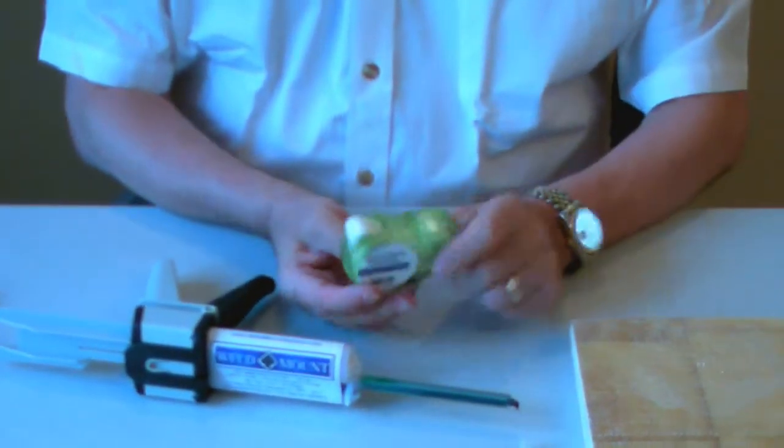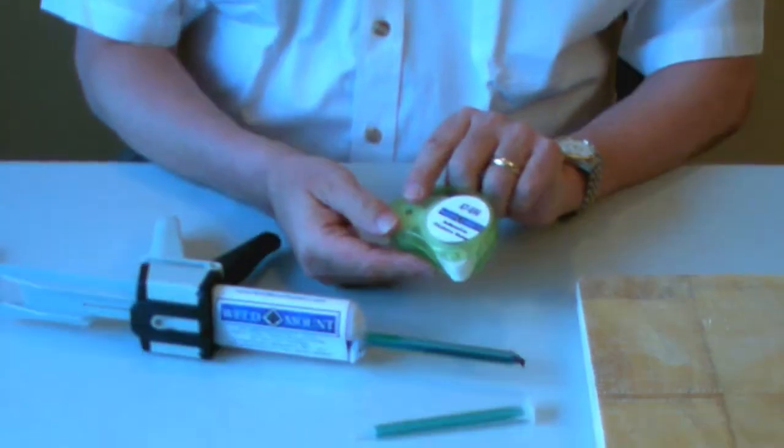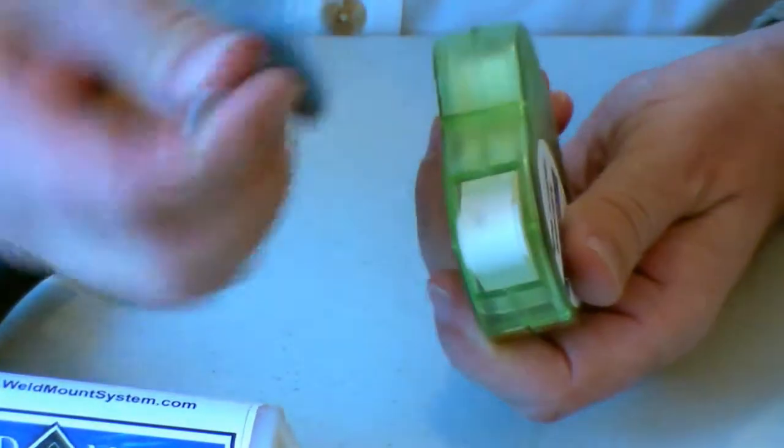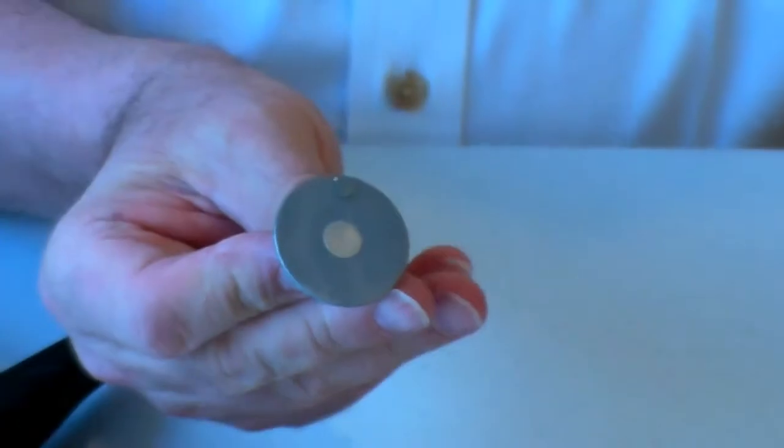This small fixture dot is contained on a roll. There are 300 dots on this roll. And it's a simple matter to take the dispenser and mate it with the stud and transfer a small dot to the bottom of the stud, if you can see it here.